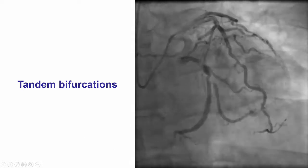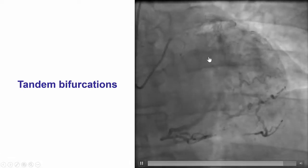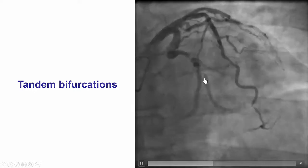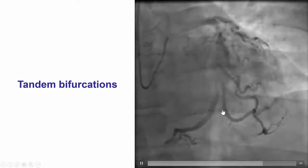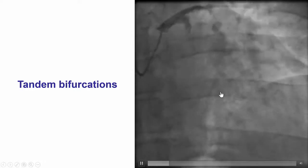This was the case of a patient with a significant circumflex lesion. It was actually two tandem bifurcations between the first and second obtuse marginal branches from a large left-dominant circumflex.